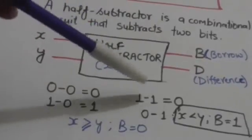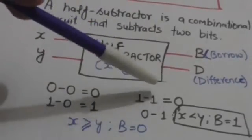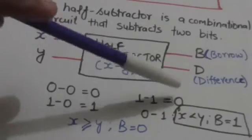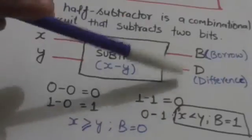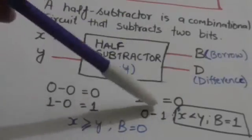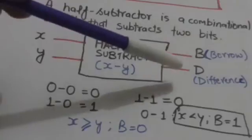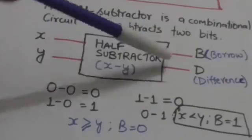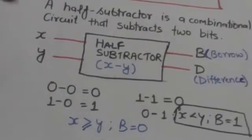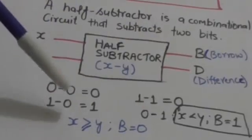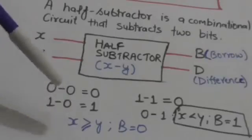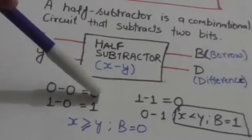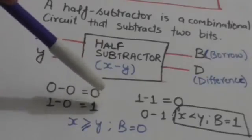When X and Y are both one, the result would be zero — that is one minus one equals zero. So the difference bit D will be zero, and since no borrow has been taken from a higher significant stage, the value of B will also be zero. When X is one and Y is zero, the difference bit would be one.